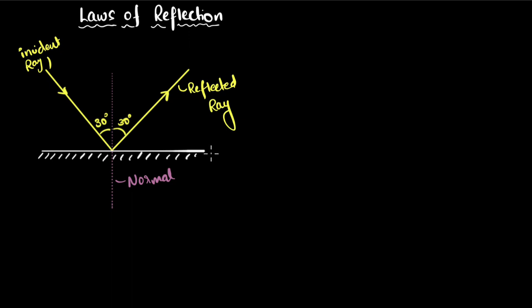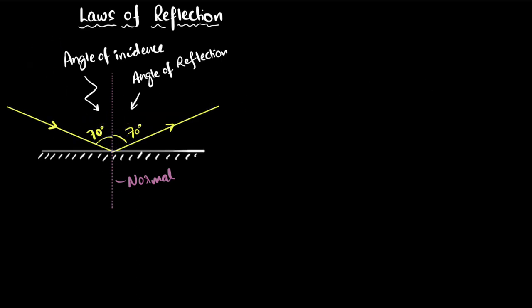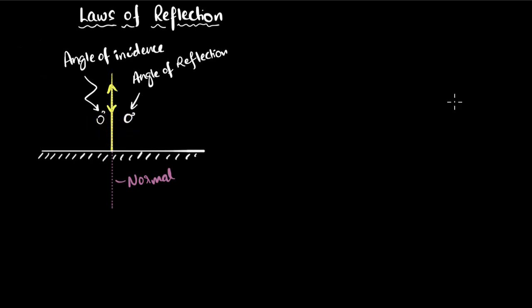The second law, which is going to be important for us, states that the angle of incidence — which is the angle between the incident ray and the normal, not this angle but this angle — will always equal the angle of reflection, the angle between the reflected ray and the normal. A larger angle of incidence gives a larger angle of reflection; a smaller angle of incidence gives a smaller angle of reflection. And if the angle of incidence is zero, meaning the ray of light is along the normal, the angle of reflection will also be zero, and the ray retraces its original path.